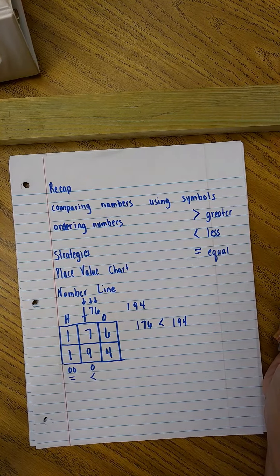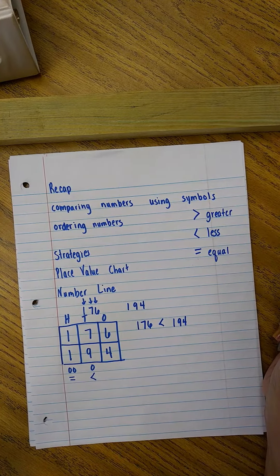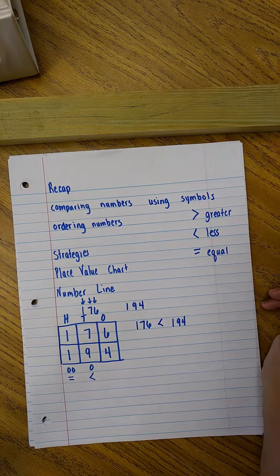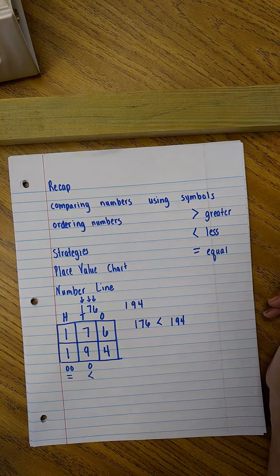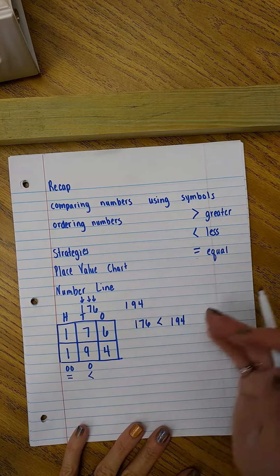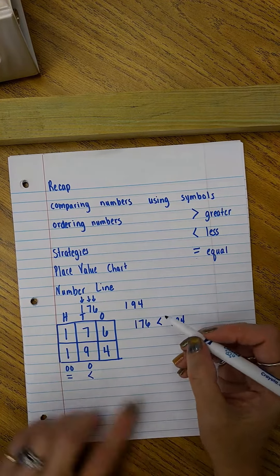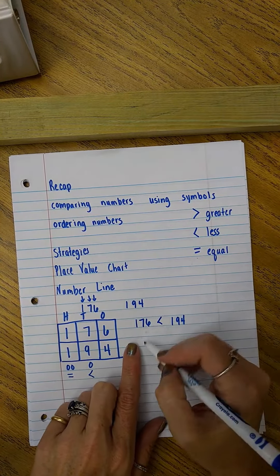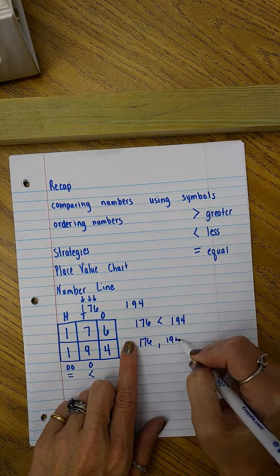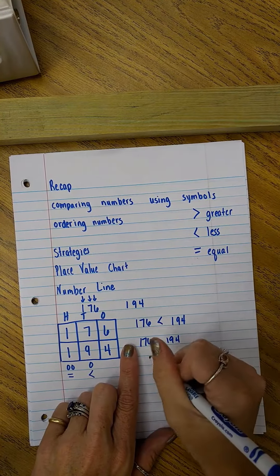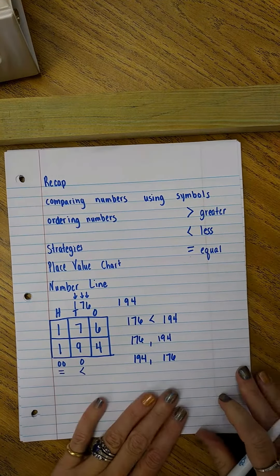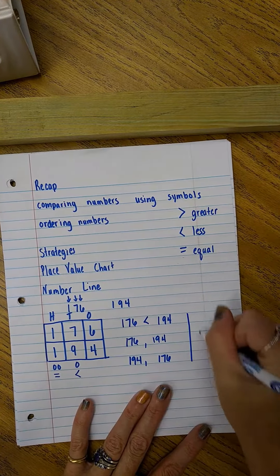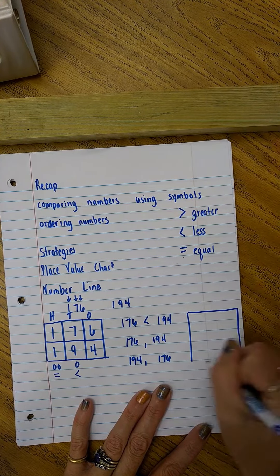Now in order to write them in least to greatest or greatest to least, I think the biggest mistake that kids make is they don't pay attention to the order in which the test question wants. So for this particular one, if I wanted least to greatest, I would look, this one is 176 comma 194. If they wanted greatest to least, it'd be 194 comma 176. So that's how we do it using a place value chart.